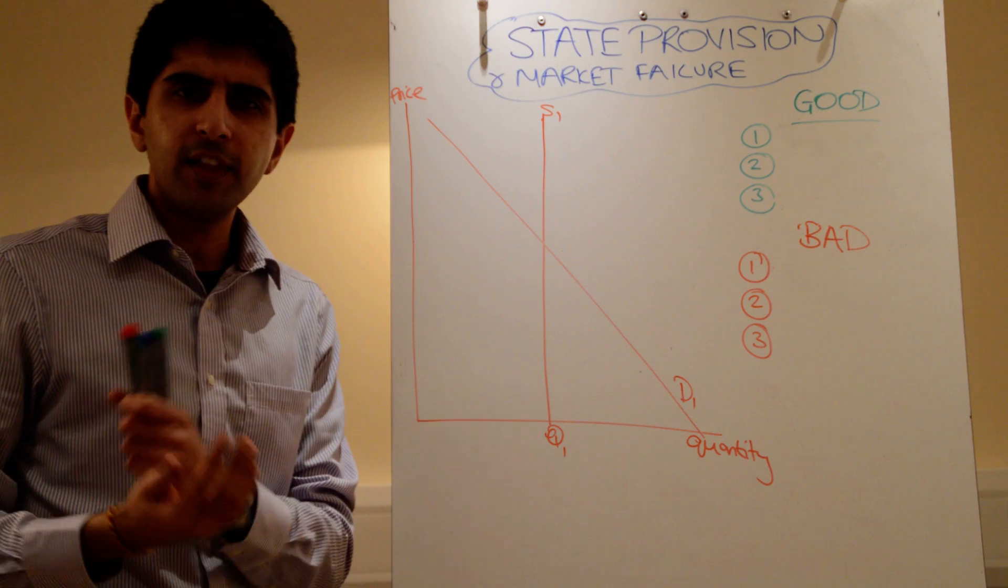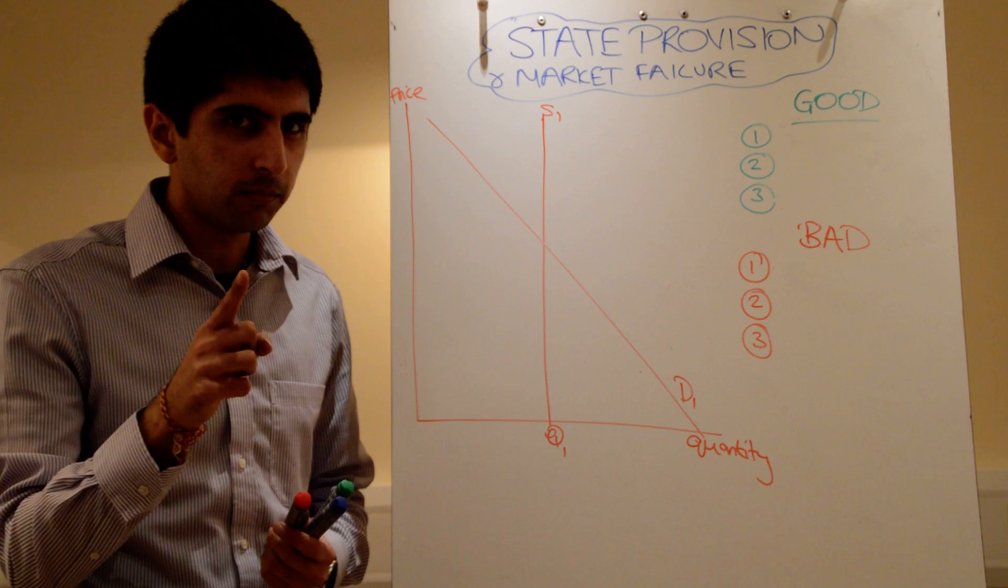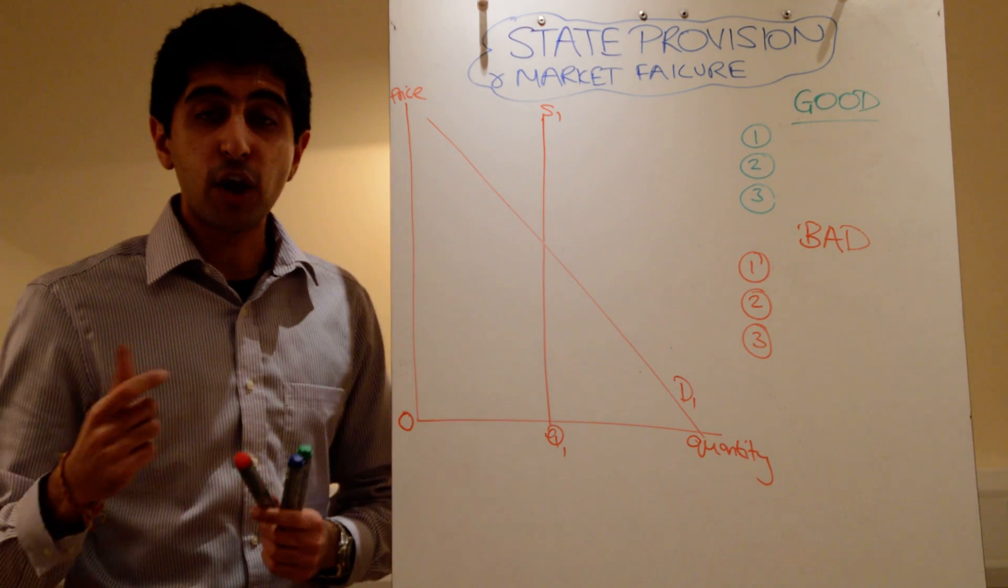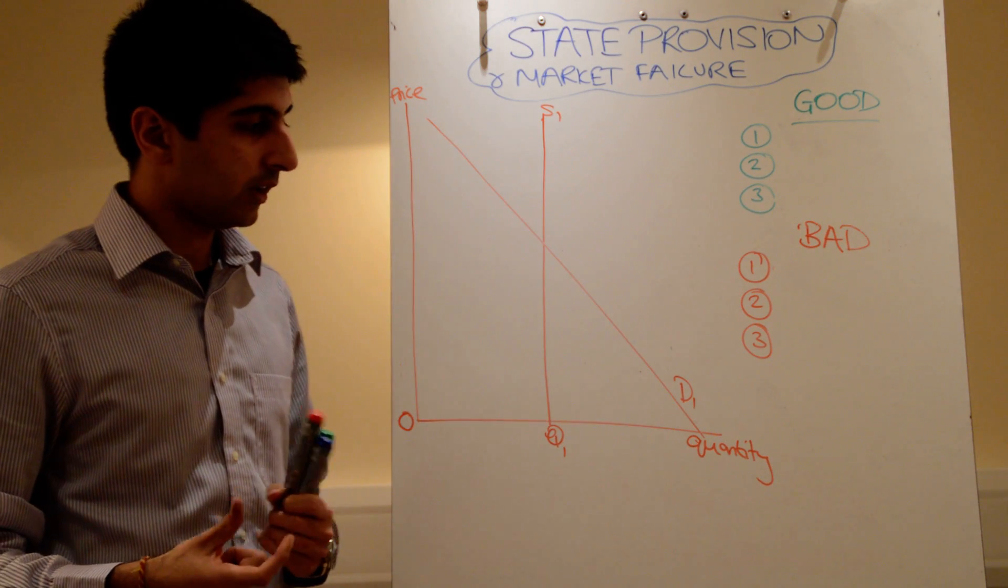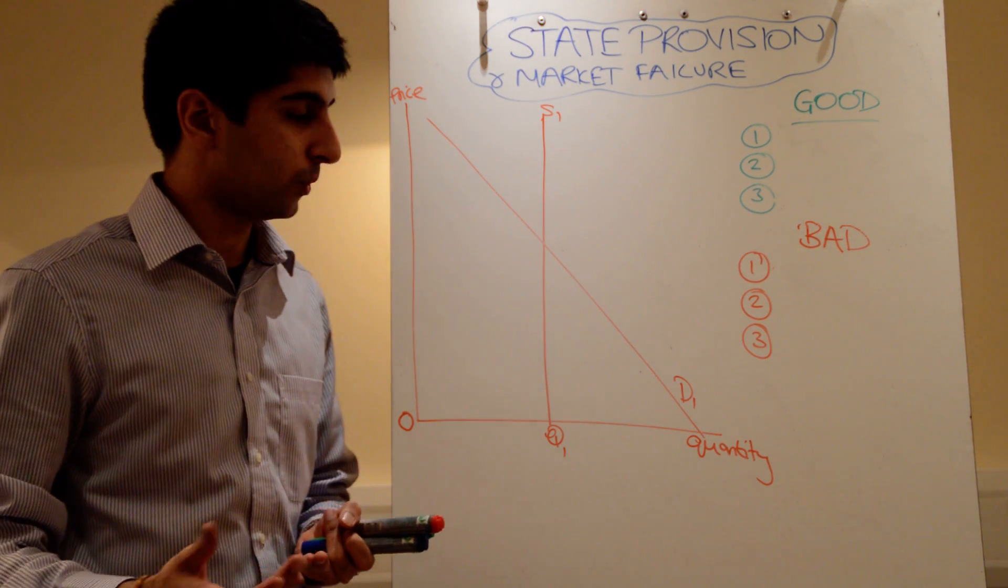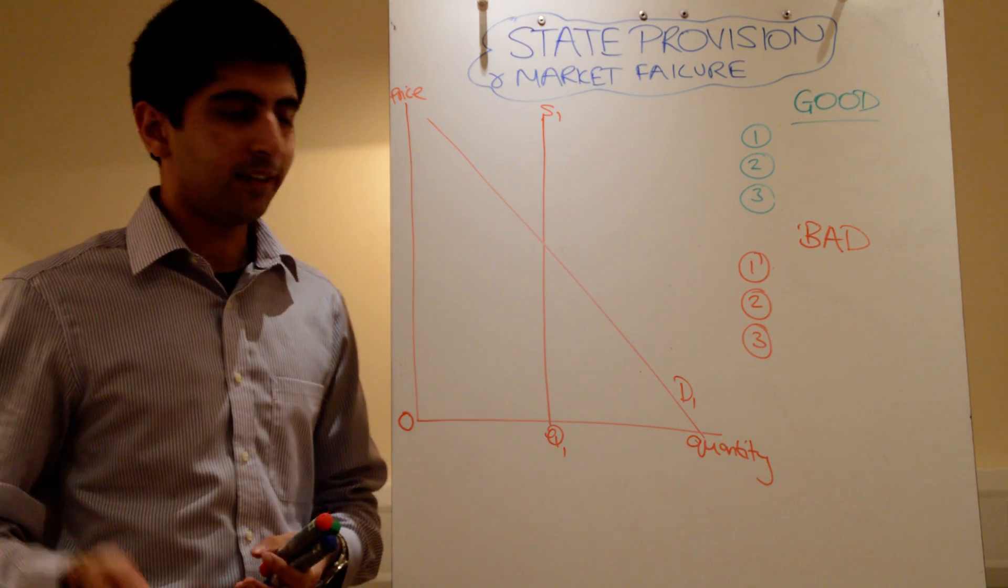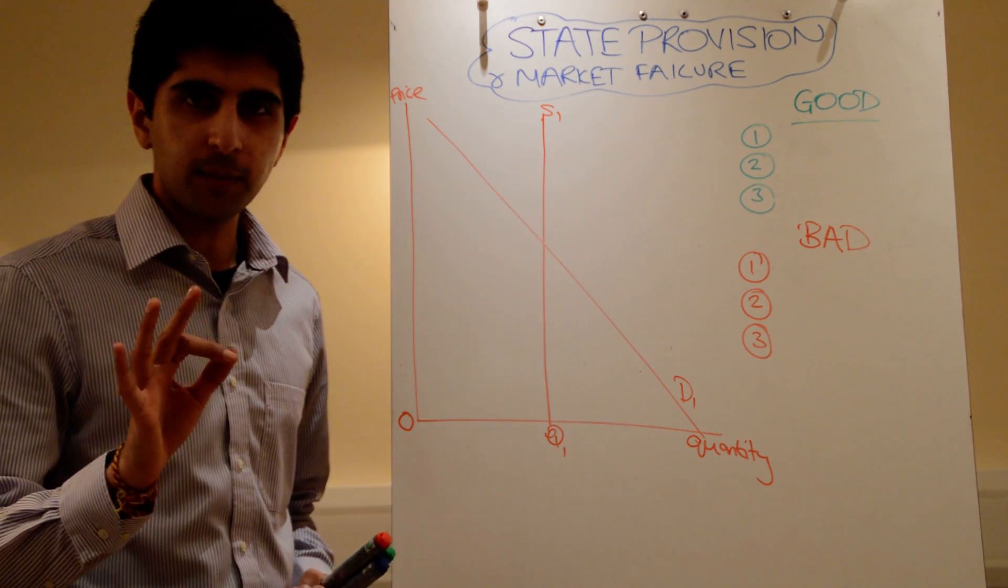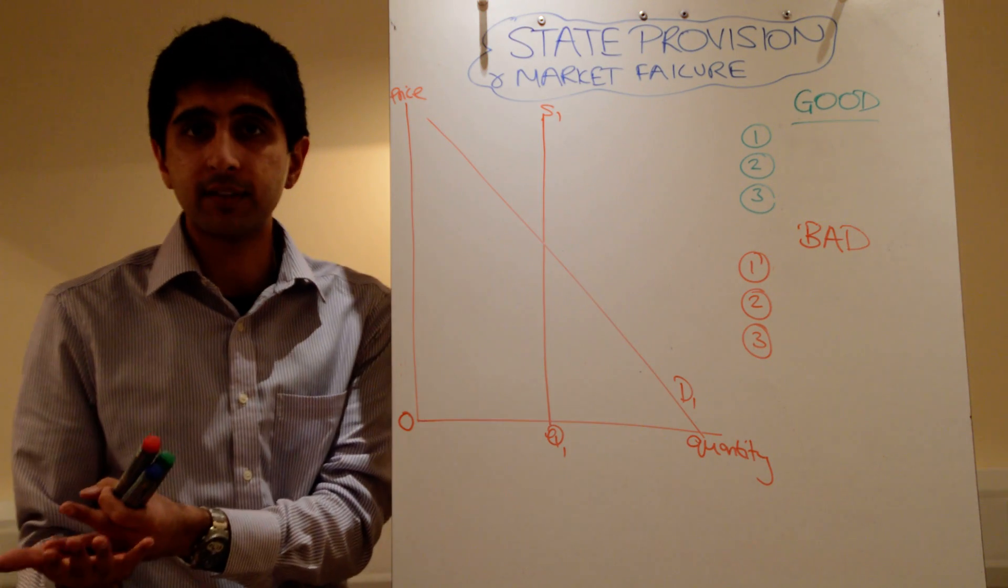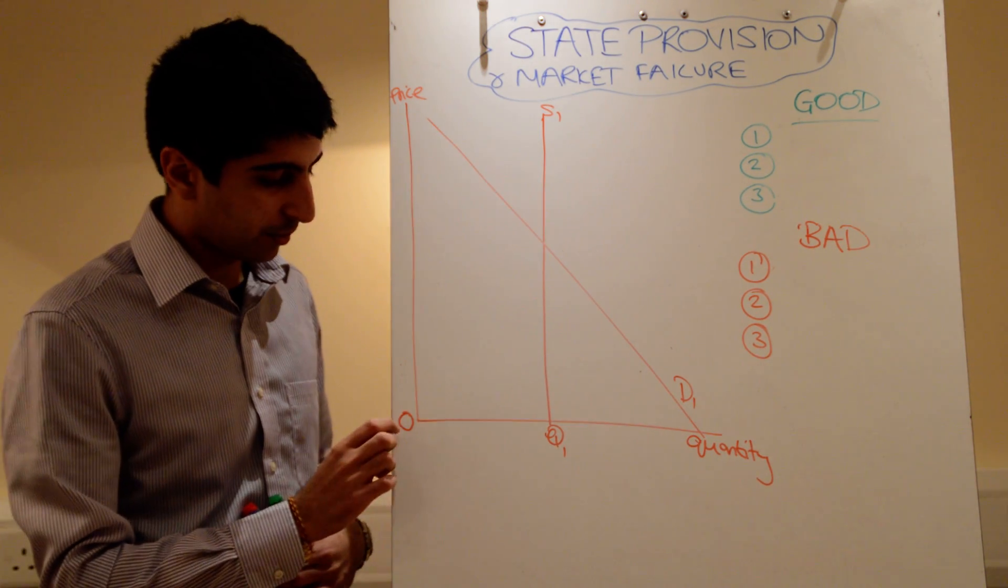Think about merit goods, think about public goods. Do we pay for them when we consume them? No, we do not. At the point of consumption they are provided free of charge. Healthcare, when we go to hospital, education when we go to state schools, public goods like road signs, roads, street lighting. These are all free at the point of consumption. Yes, we pay for them through taxes, taxpayer revenue pays for these things, but at the point of consumption the price is zero.